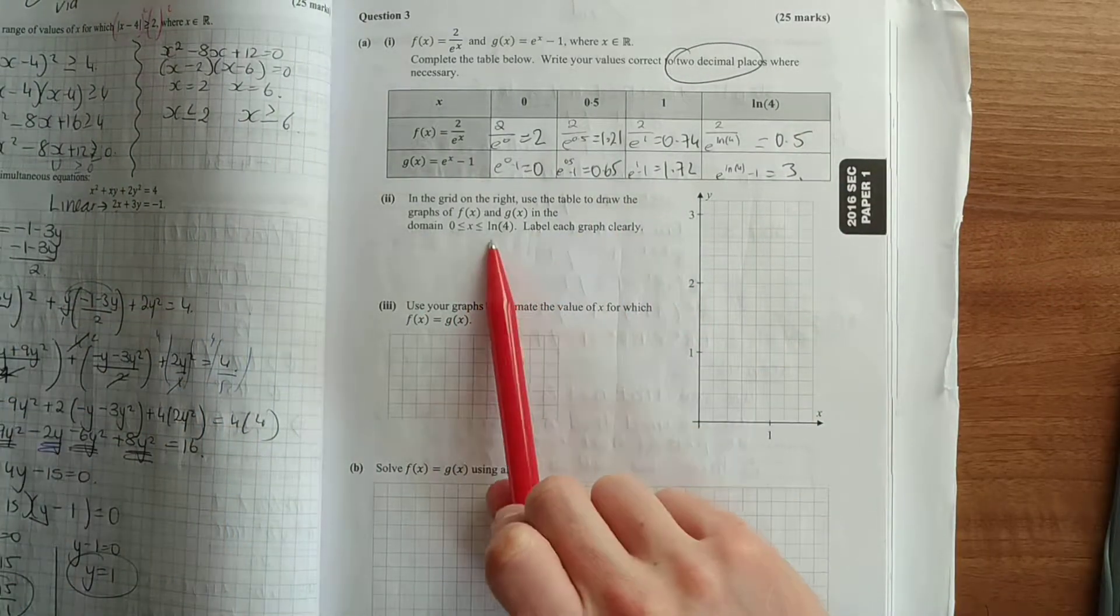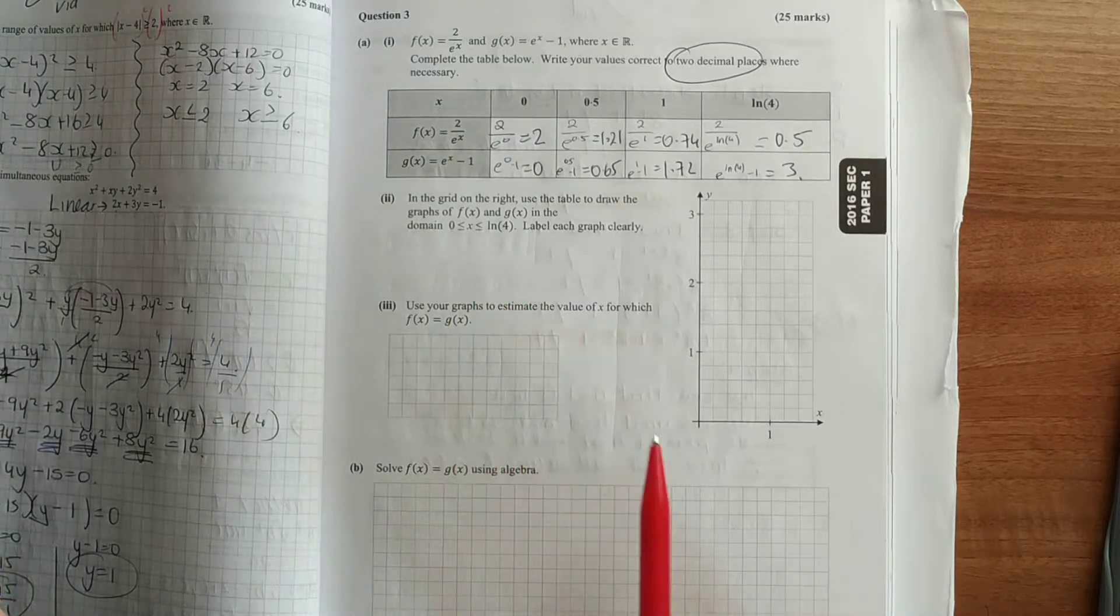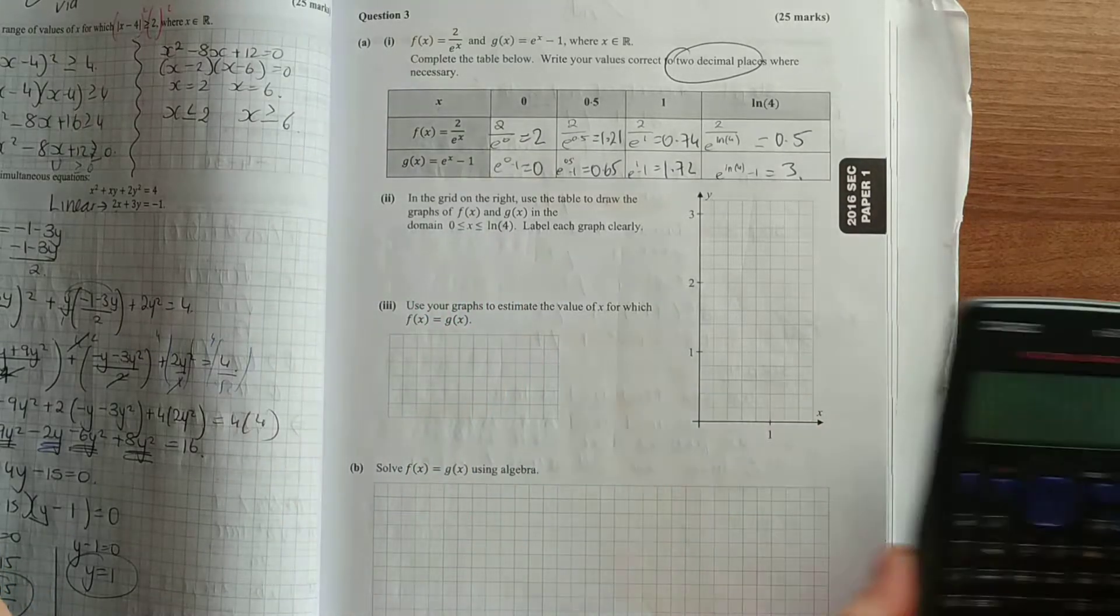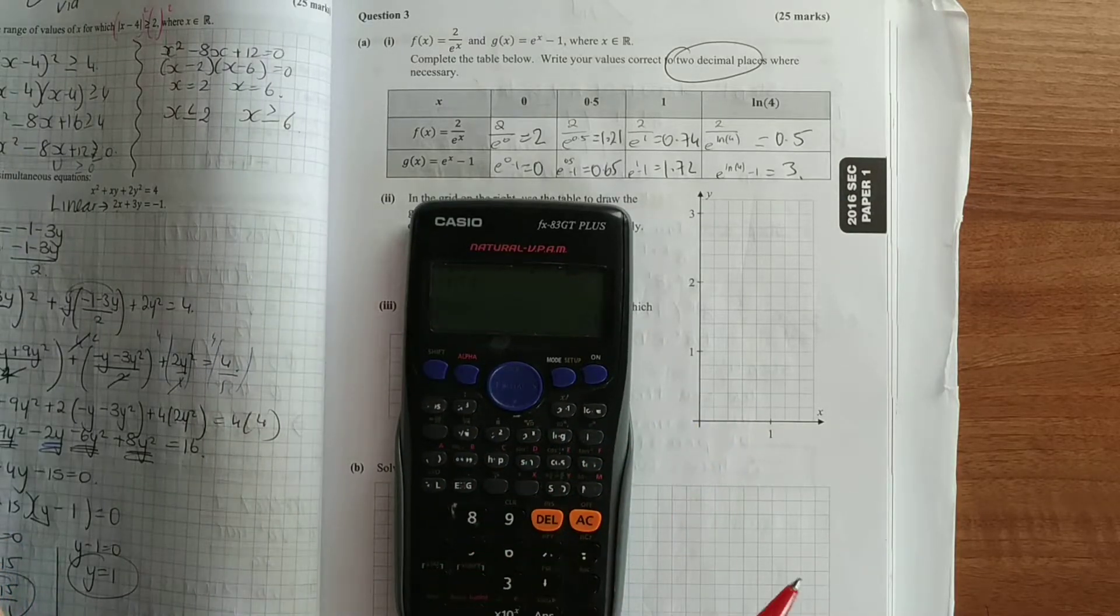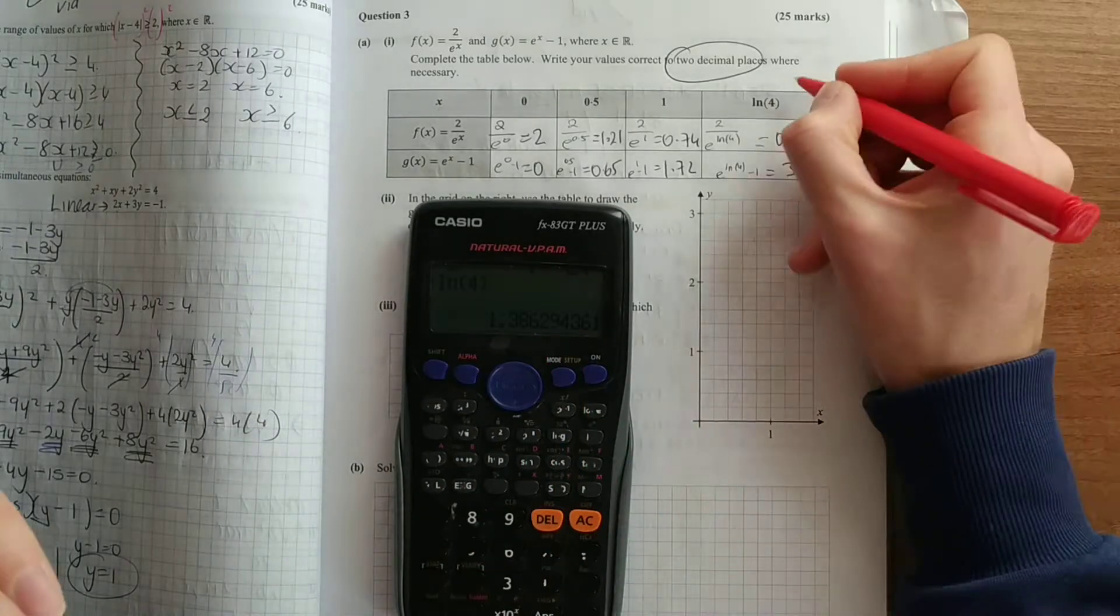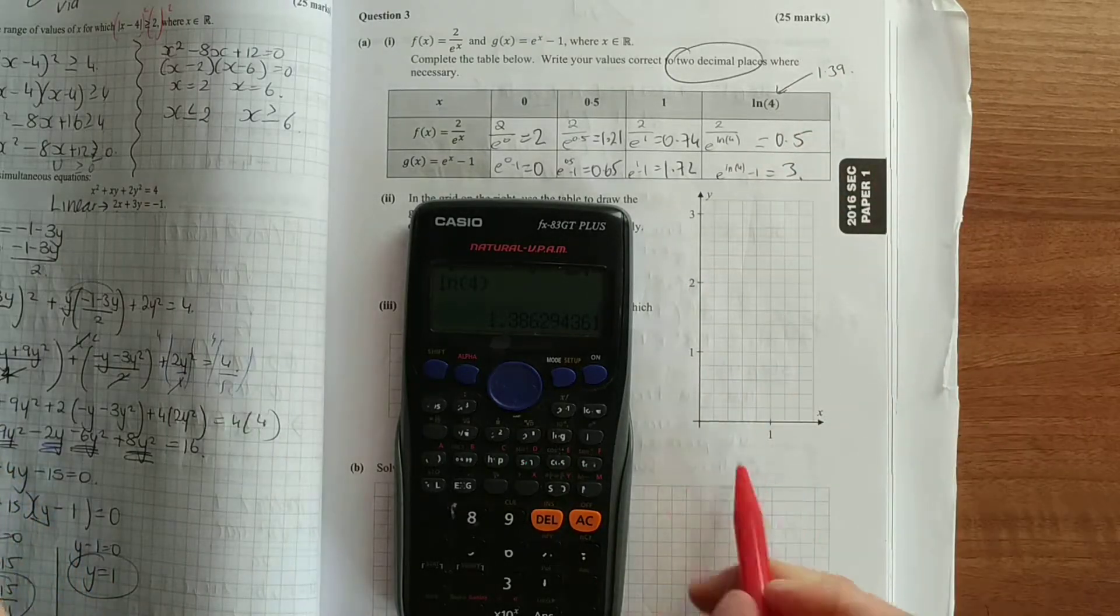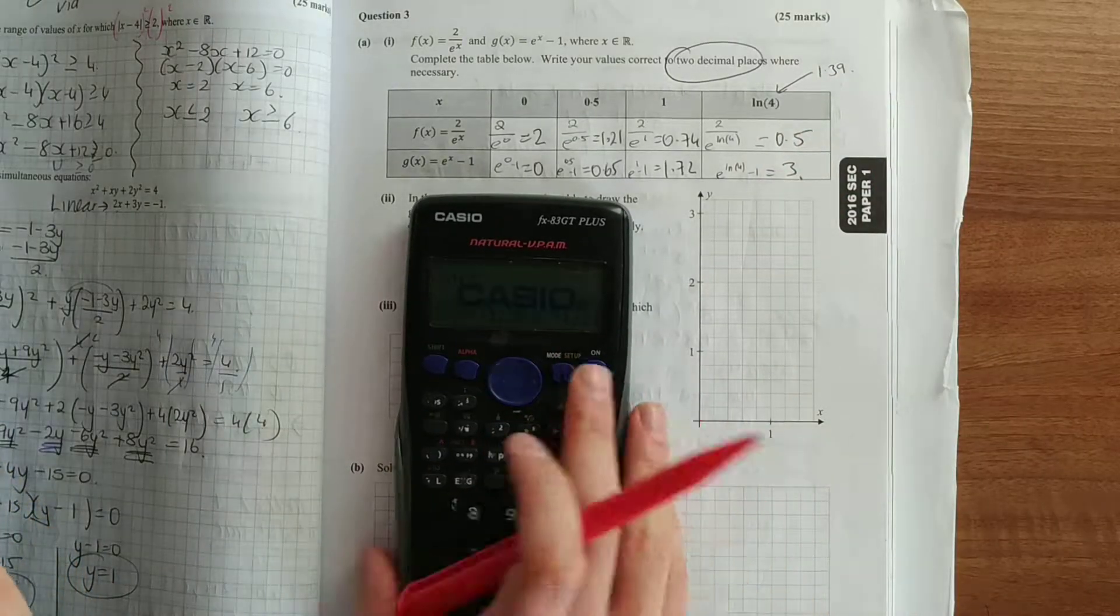In the graph below, use the table to draw the graphs of f of x and g of x in this domain, all the way to ln of 4. Now if you're unsure of ln of 4, put it in the calculator, we'll see ln of 4 is 1.39. So it'll give us an approximation when we're drawing it here in the graph.